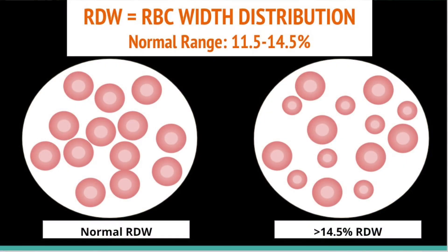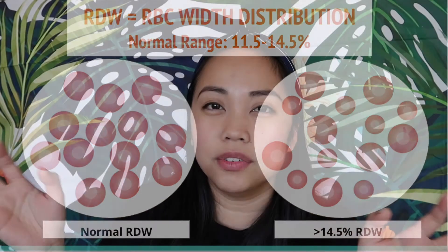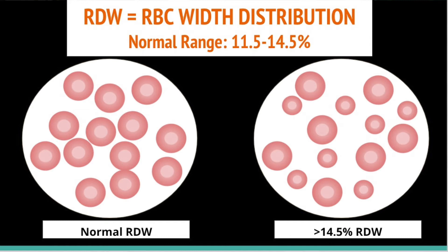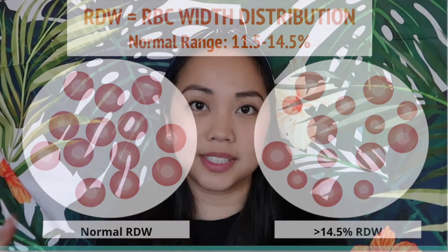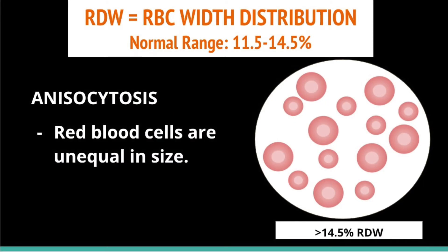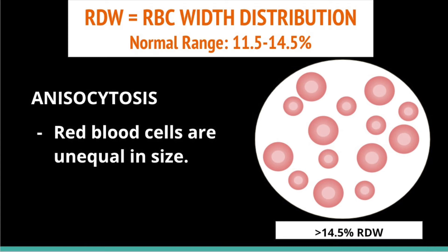Lastly, the RDW — Red Cell Distribution Width — is a calculated value provided by the analyzer. RDW is a gauge of size variation among your RBCs. If there are both very small microcytic RBCs and large ovalocytes, there is a lot of size variation. The normal reference range for RDW is 11.5 to 14.5%. When RBCs are unequal in size and RDW exceeds 14.5%, this is known as anisocytosis.